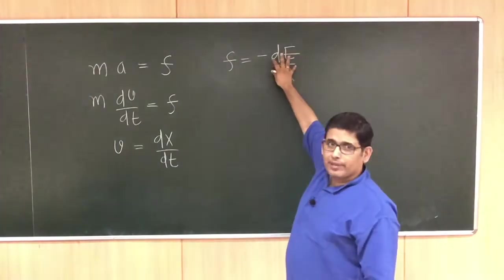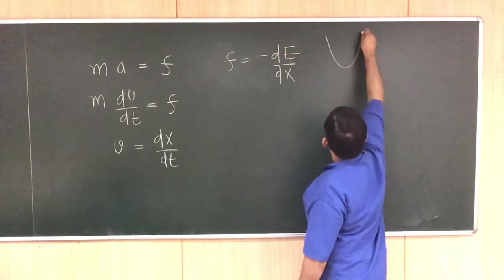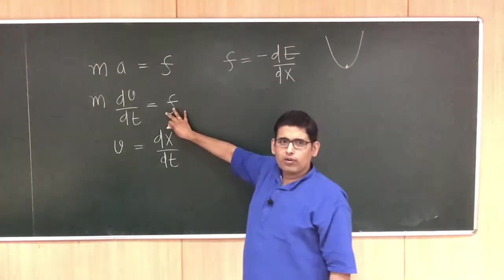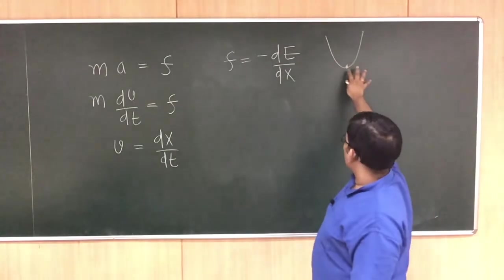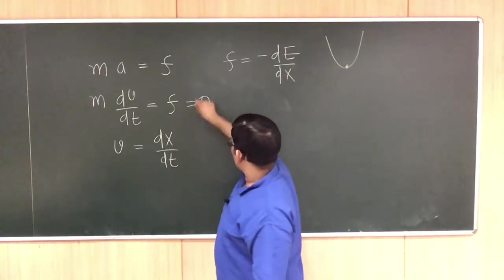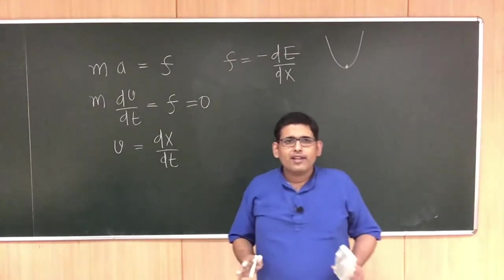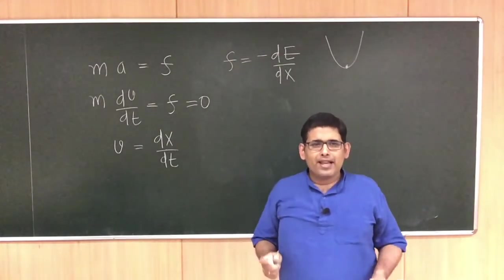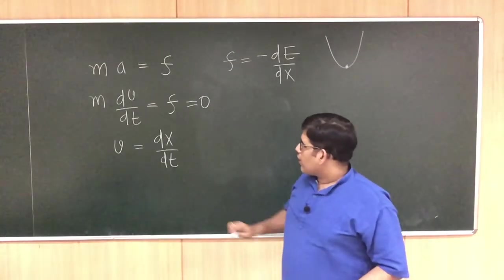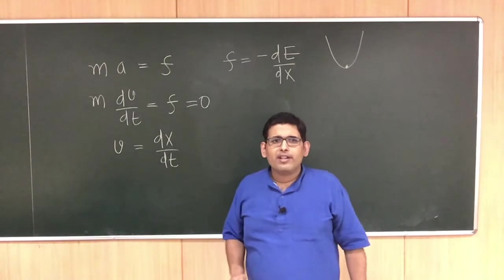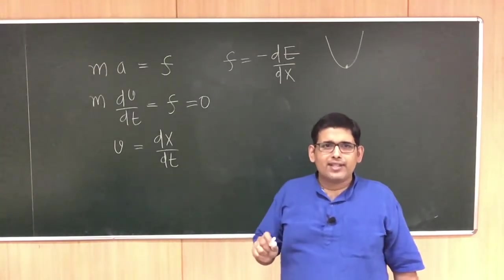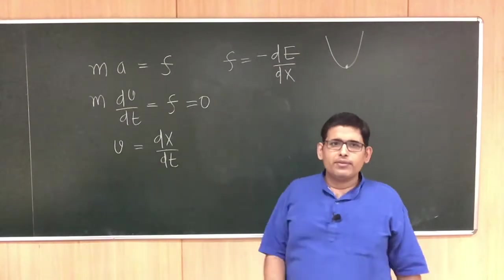If the system is at the minimum of the energy, the derivative is zero, therefore the force is zero. So when the system is at the minimum of the energy, the force would be zero. When the force is balanced, we talked about how the system would reach its equilibrium. Based on this Newton's equation, we can learn a couple of interesting things. Let us quickly discuss what we can learn.